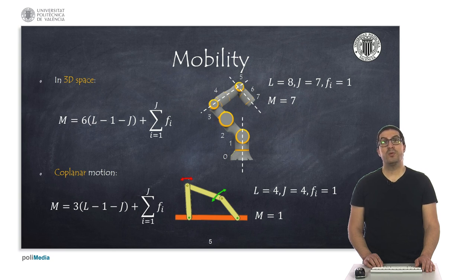Here we can see two simple cases of an articulated system. In the first case, the total number of links including the fixed link is eight, numbered from zero to eight. On the other hand, the total amount of joints for this particular robot arm is seven, each of them with a single degree of freedom, so Fi equals one. Therefore, the mobility of this robot is seven.